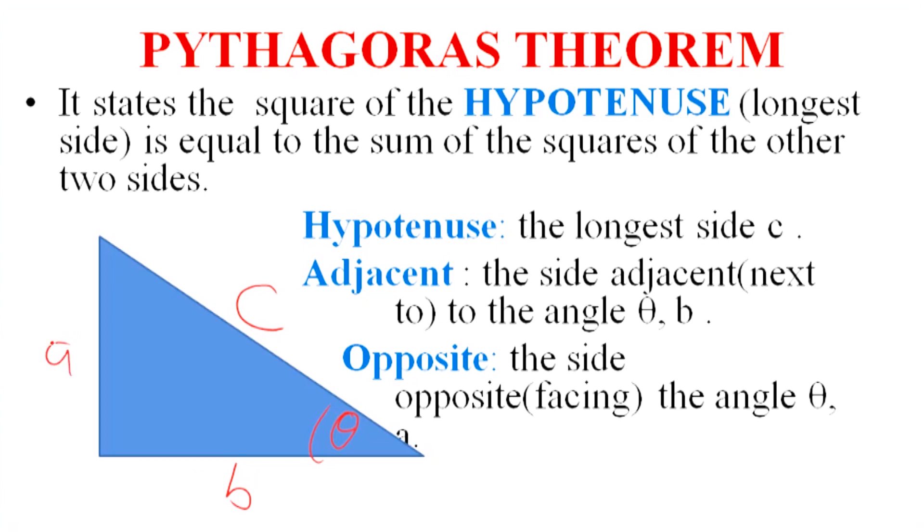Now, you need to be careful, because the angle can also be at the top. So, if the angle is created at the top, let's call it beta, then it changes the adjacent side. Because in this case, the adjacent rather becomes A, and then the B rather becomes the opposite. So, you need to be careful about the labeling.